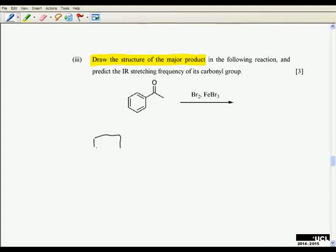What do we need to know? Well, we need to know what the reagents do. Bromine, iron(III) bromide—it's an aromatic bromination reaction. We need to know the directing effects of this ketone group. The ketone is meta-directing, so this is going to be the main product.